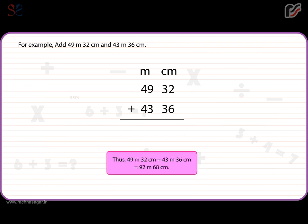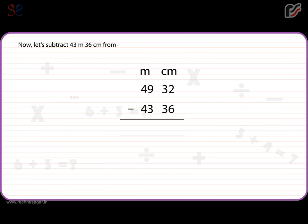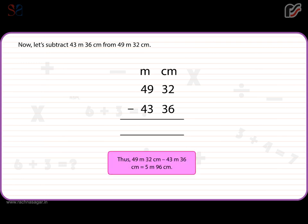Thus, 49 meters 32 centimeters plus 43 meters 36 centimeters is equal to 92 meters 68 centimeters. Now, let's subtract 43 meters 36 centimeters from 49 meters 32 centimeters. Thus, 49 meters 32 centimeters minus 43 meters 36 centimeters is equal to 5 meters 96 centimeters.